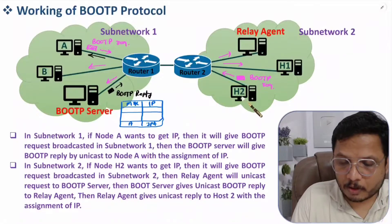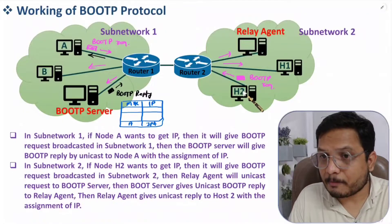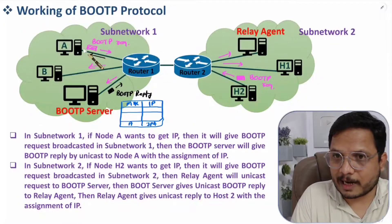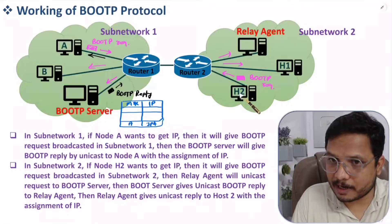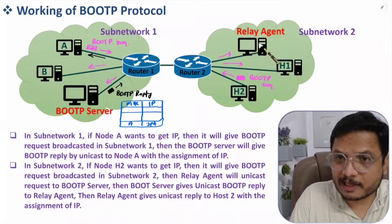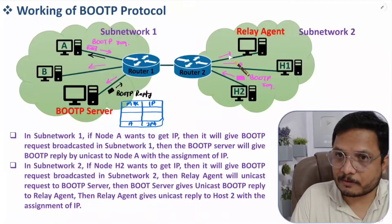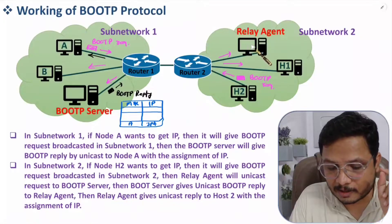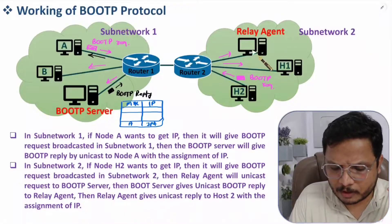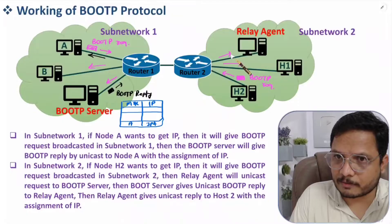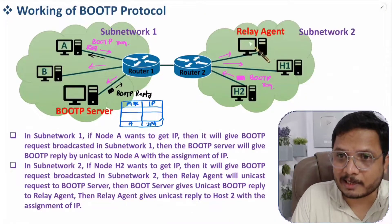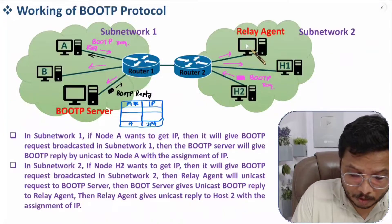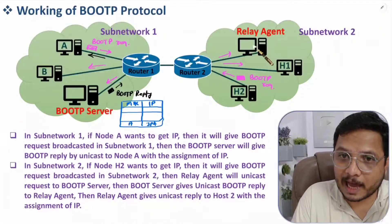The broadcast will not go to sub-network one because Host 2 only has a MAC address, and with a MAC address alone it cannot forward data to other networks — it needs an IP address for that. The relay agent in sub-network two will receive this BOOTP request, but the relay agent cannot assign an IP address — it functions as an agent only.